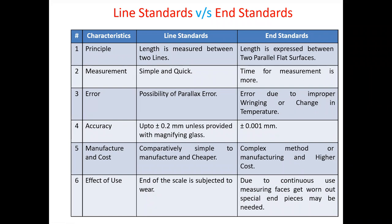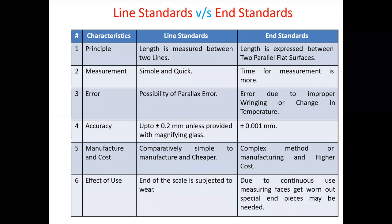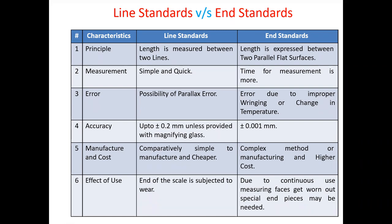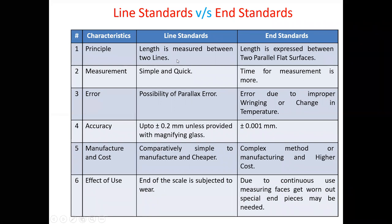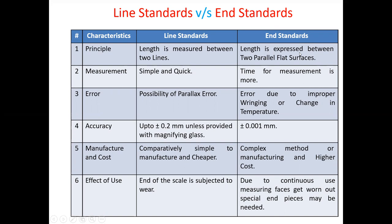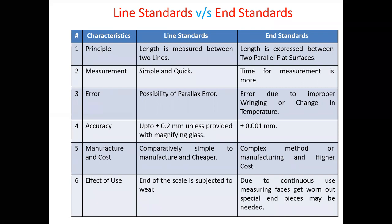The difference between line standard and end standard based on their characteristics — principle, measurement, error, accuracy, manufacture and cost, effect of use. For the principle: in line standard, length is measured between two lines; in end standard, length is expressed between two parallel flat surfaces.